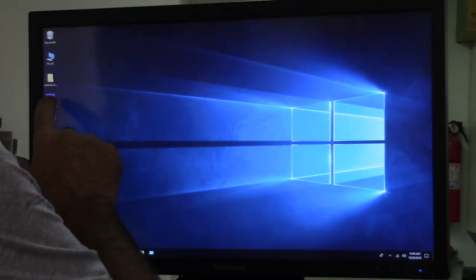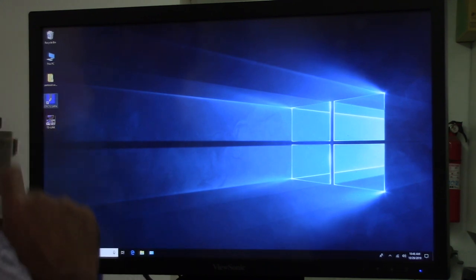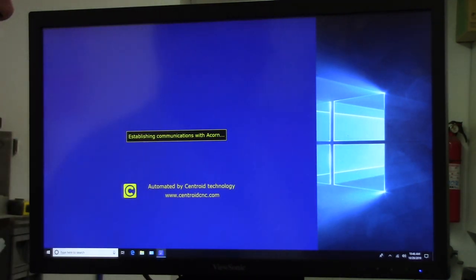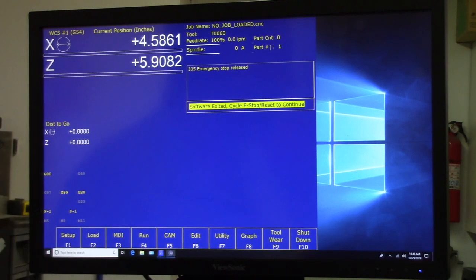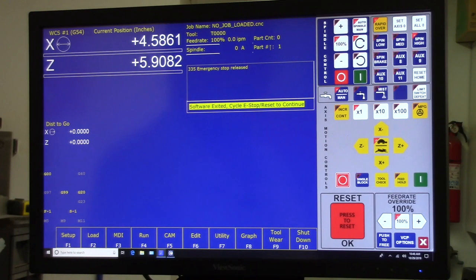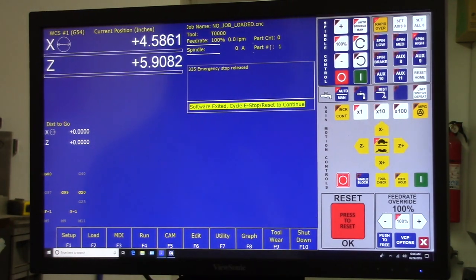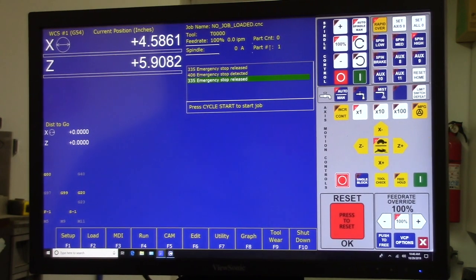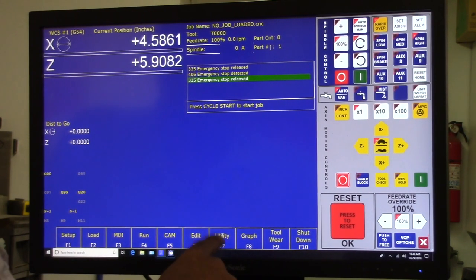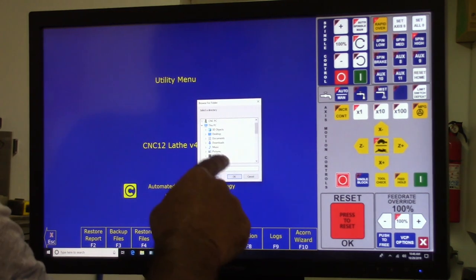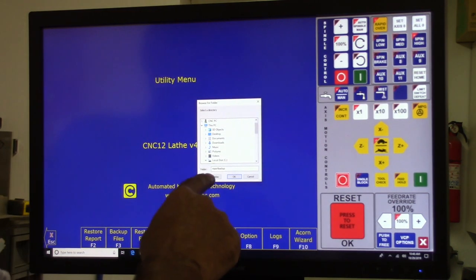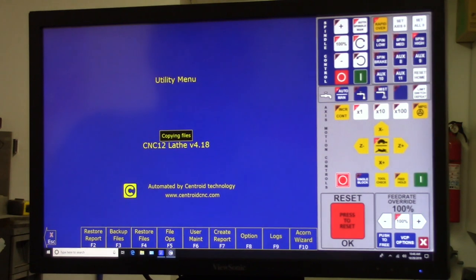I'm going to go ahead and start CNC12 lathe. I'm going to try and do as much as I can to stay out of the picture. I'm going to cycle e-stop, software exit, cycle e-stop, reset to continue. So I'm going to do that. I'm going to go down here to utility, create a report, and the folder is going to create the report to his report backup. I press okay. Give it a little bit. Report's completed.